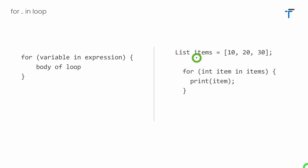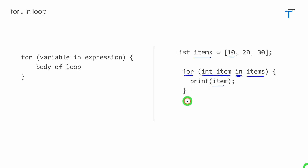Here I have a list called items with three values, and I can use the for-in loop to iterate and print its values. I have written a for-in loop using the for keyword, created a variable int item, specified the in keyword, and named the collection items. It will iterate for each and every element in items. Practically, the first element — 10 — is stored in item, so it prints 10. The second time the loop runs, item holds the second element — 20 — and prints 20. The third time, item holds 30 and prints 30.